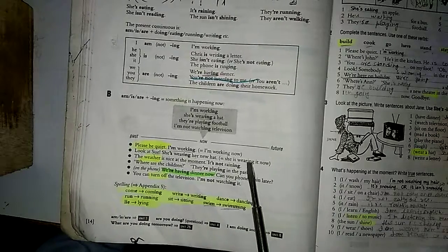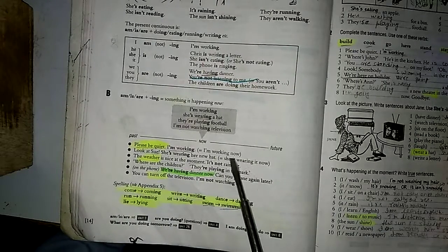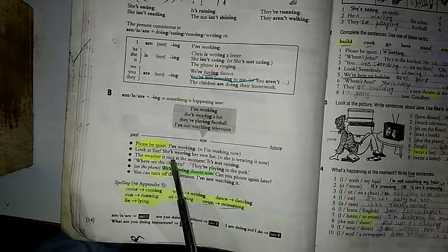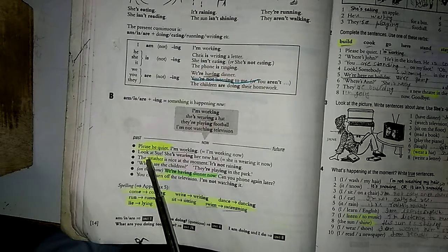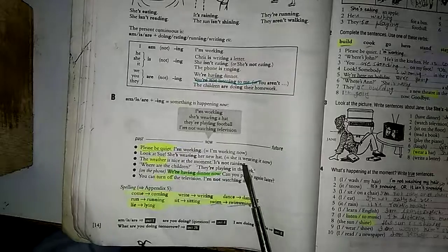She is worrying it now. Where is it? The weather is nice at the moment. The weather is nice. It is not raining. It is not raining.